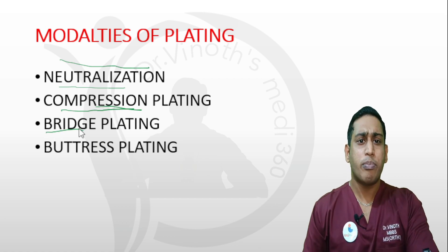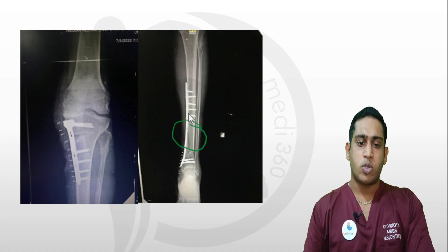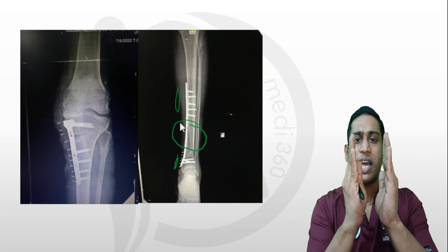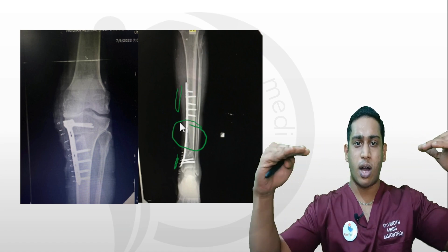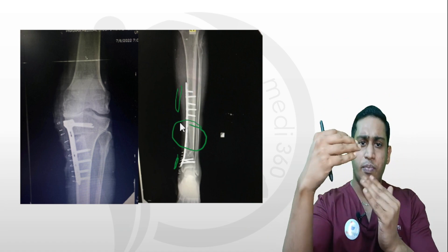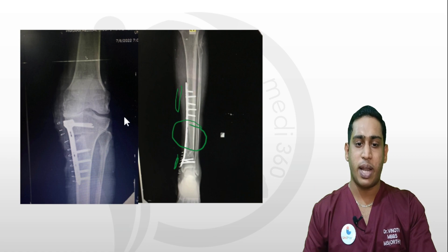The third modality is bridge plating. As the name suggests, we do not open the fracture site. Instead, we take an incision proximal and distal to the fracture, leaving the fracture site untouched — it acts as a bridge. Like a bridge with a central pillar, the fracture site acts as the pillar, and we fix the plate with screws on either side of it. This system is called bridge plating.